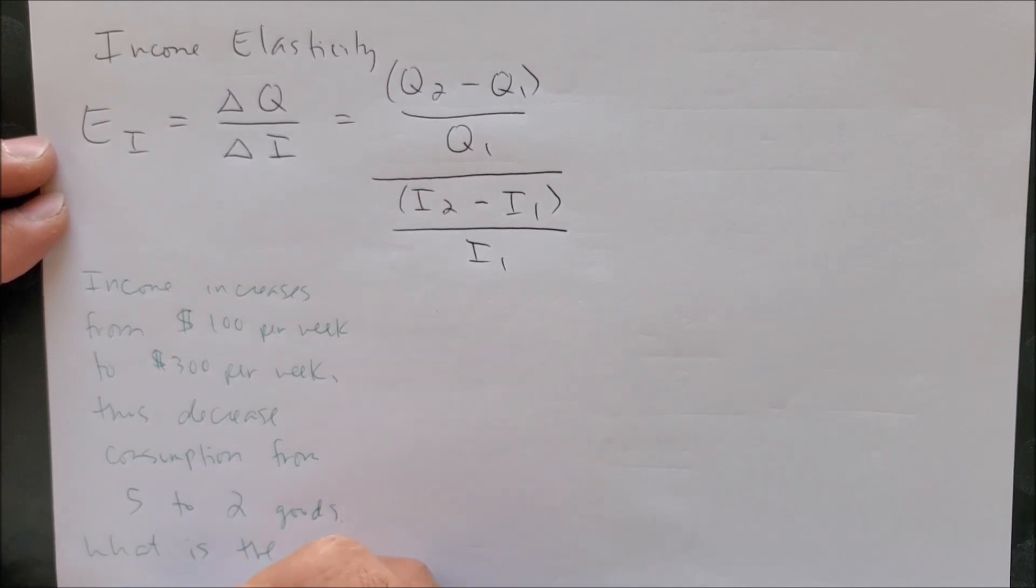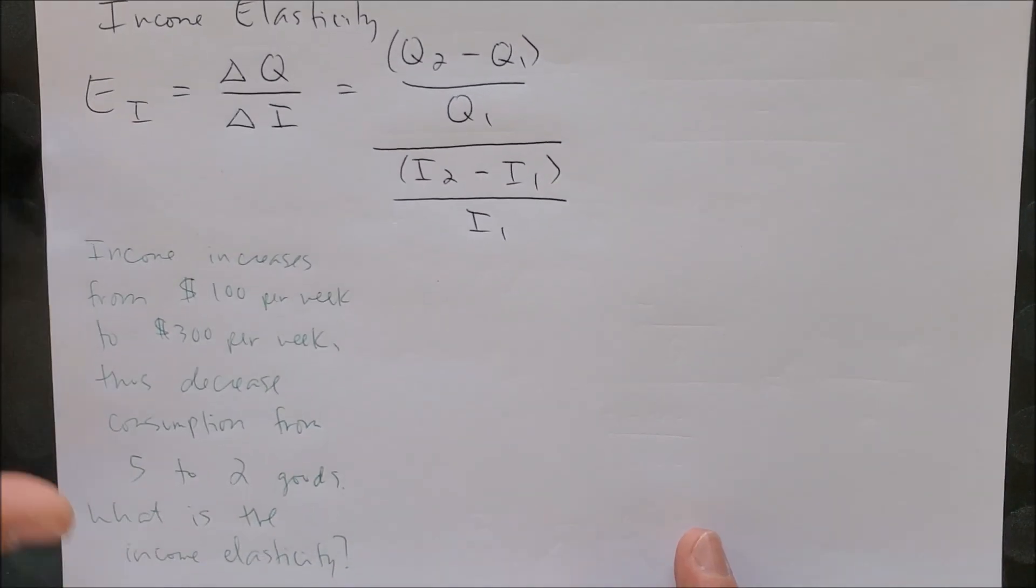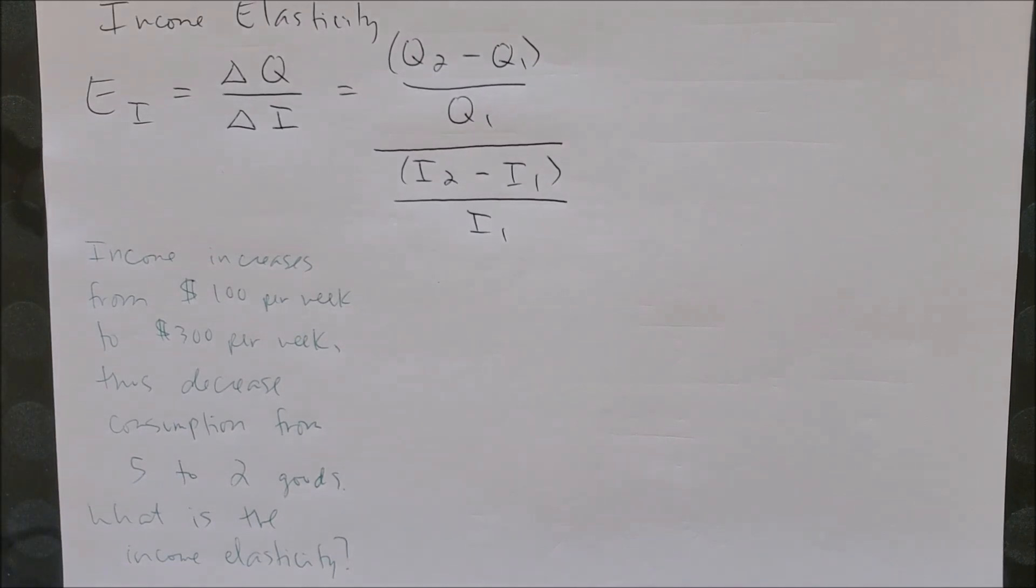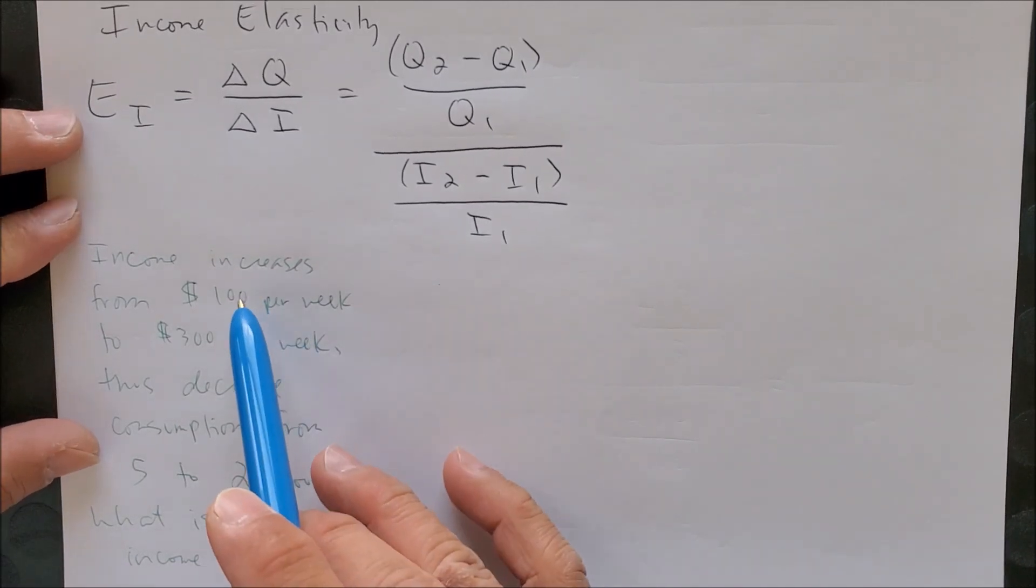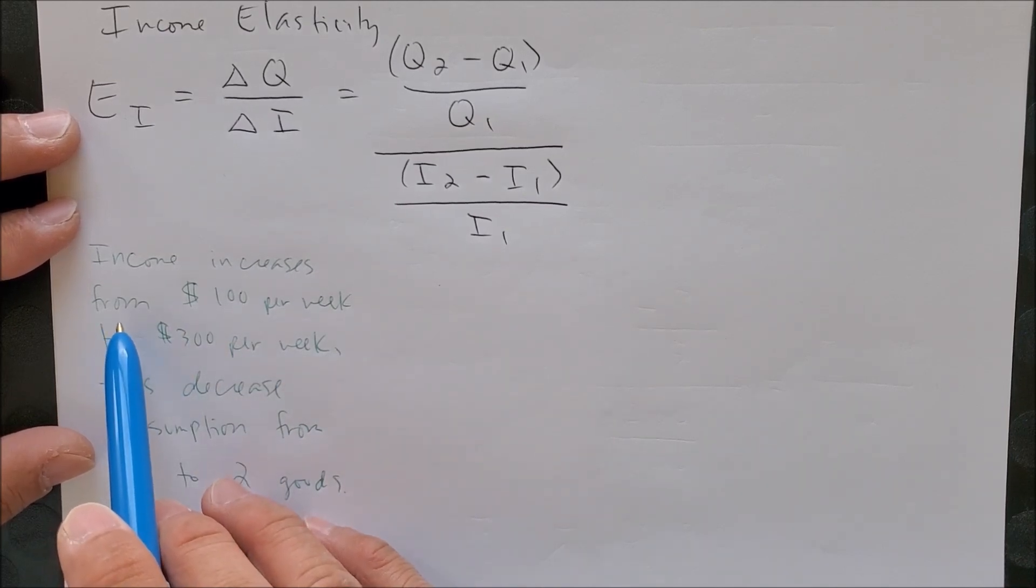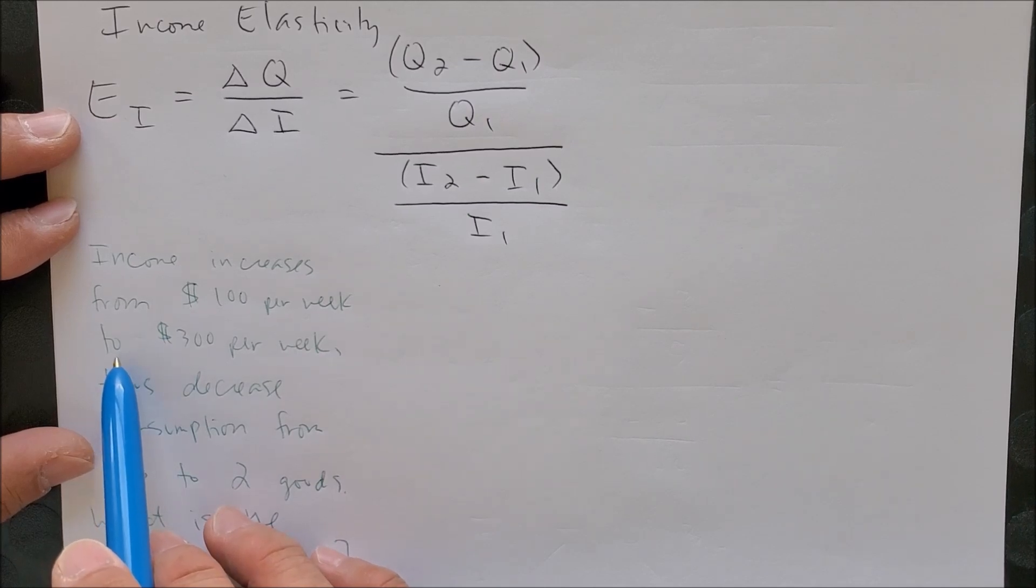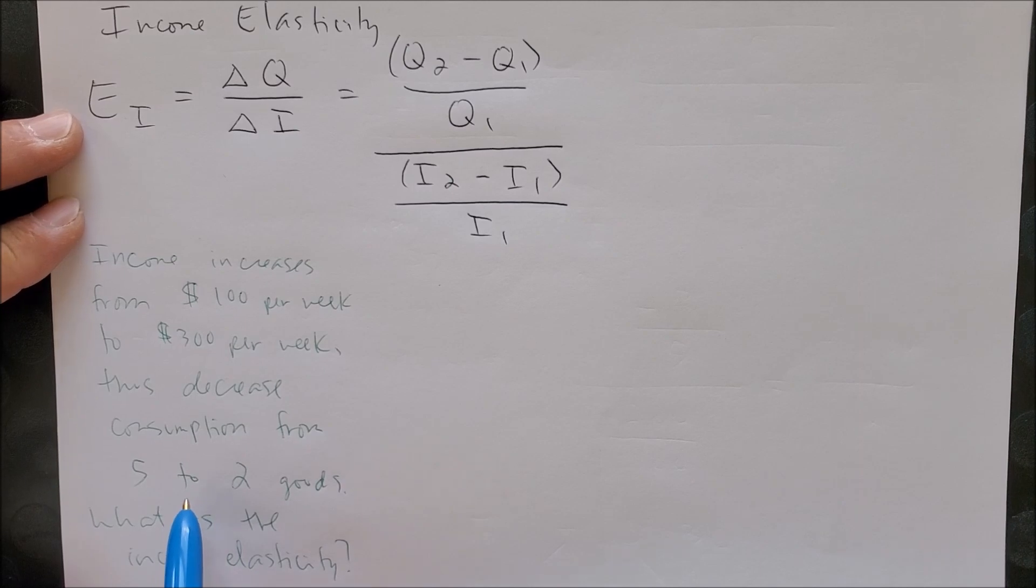What is the income elasticity? So now we can see that we have two sets of numbers given. The first set gives us the income, and the word 'from' would tell us it's the old income and 'to' must be the new income.